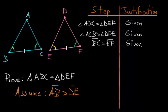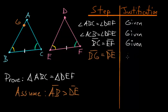From this assumption we can derive a logical contradiction. We cut off a portion of line AB at a point G such that BG is equal to DE. We can do this due to Book 1, Proposition 3.